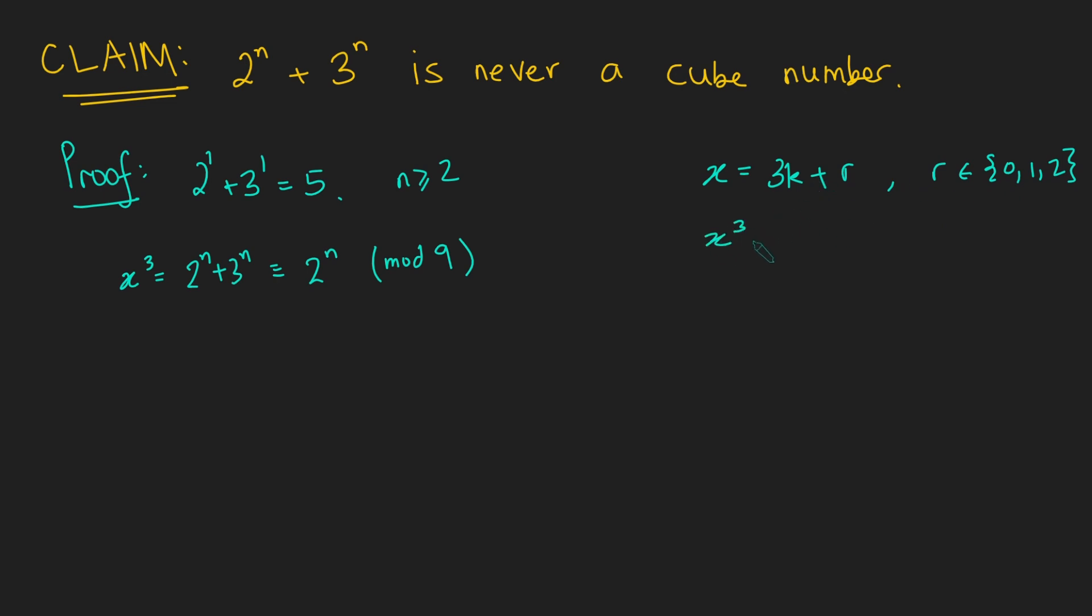So if I look at x cubed, that's just going to be 3k plus r cubed. And now using the binomial theorem, this is just 27k cubed plus 27k squared r plus 9kr squared plus r cubed.